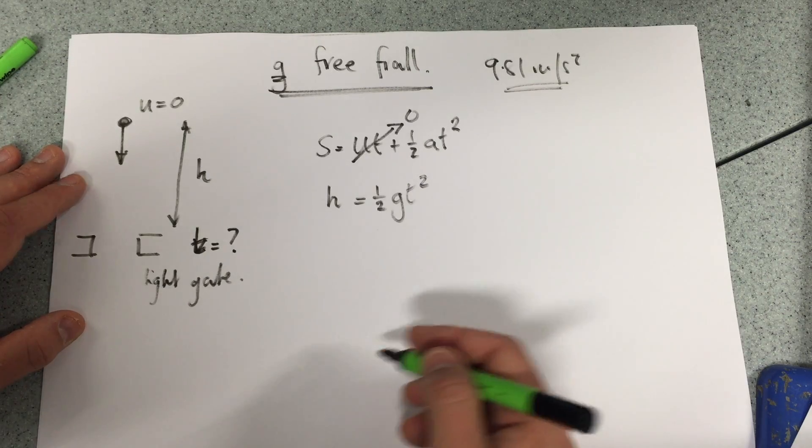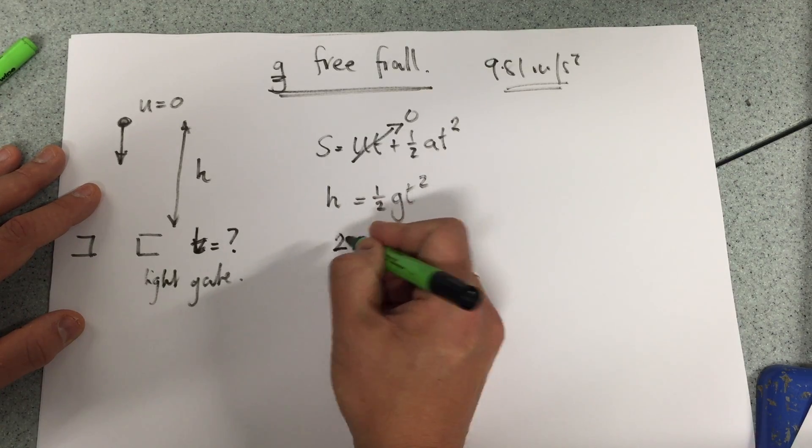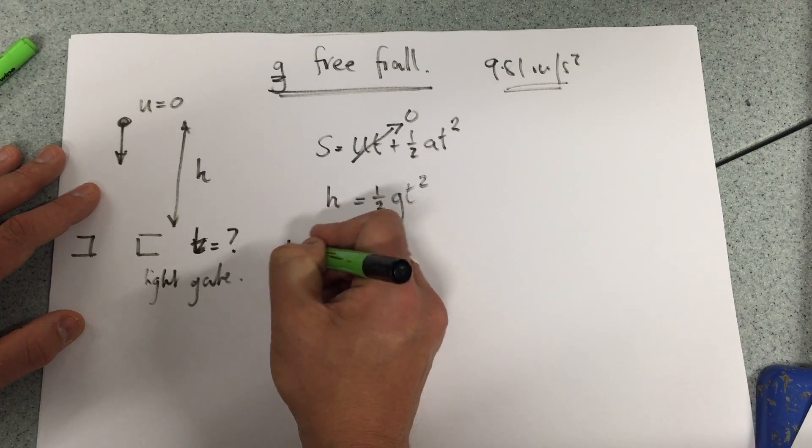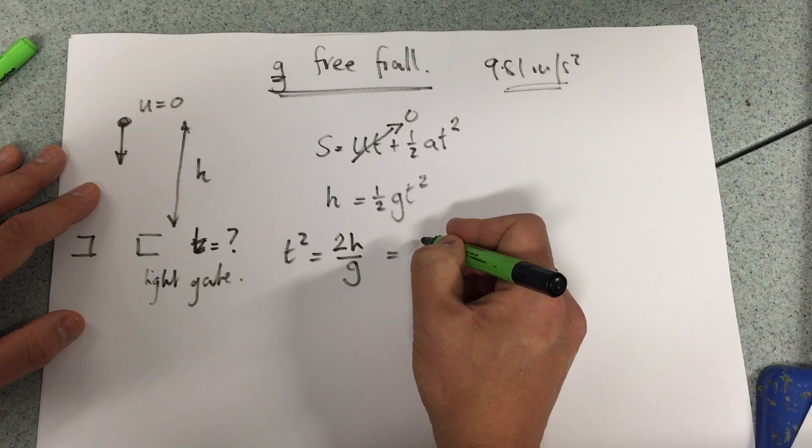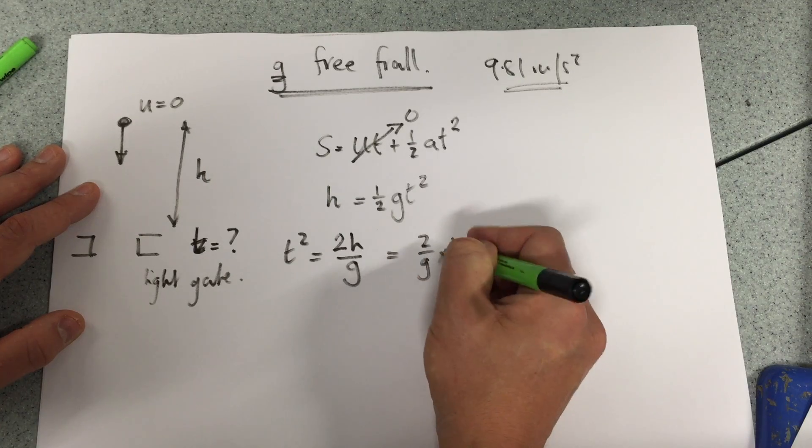And then come up with, hopefully, a graph. Let me just rewrite that slightly to do 2h over g equals t squared, or indeed 2 over g times h.